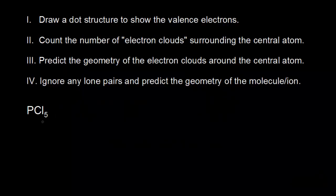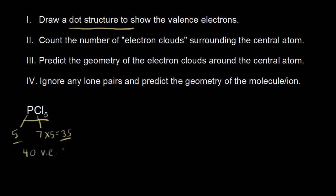Let's use VSEPR theory to predict the structure of phosphorus pentachloride. The first thing we need to do is draw a dot structure to show our valence electrons. We find phosphorus in group 5, so 5 valence electrons. Chlorine is in group 7, so 7 valence electrons, and there are 5 of them. So we go ahead and put our 5 chlorines around our central phosphorus atom.